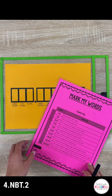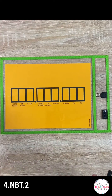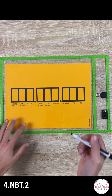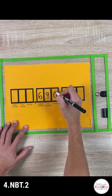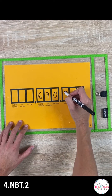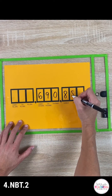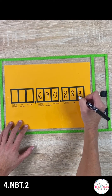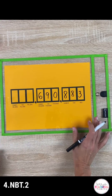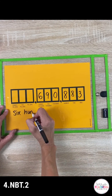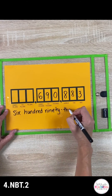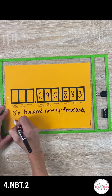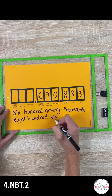In the next activity, provide students with the standard form of a number. You can either display it for them or read it to them out loud and have them record it on their place value chart. In this example, the number is 690,883. Have your students rewrite this number above or below the standard form in word form.